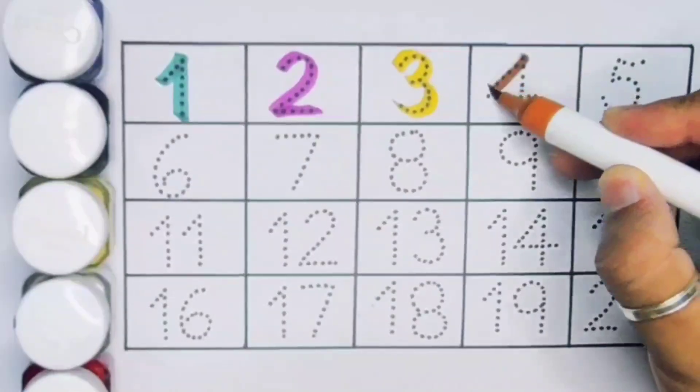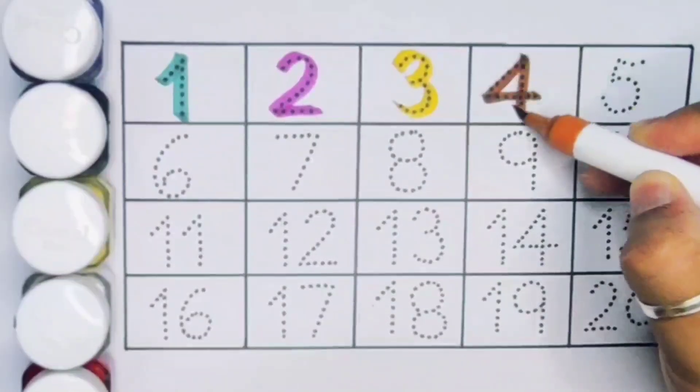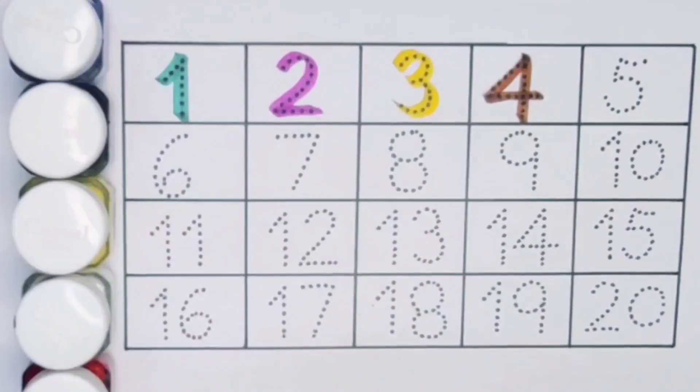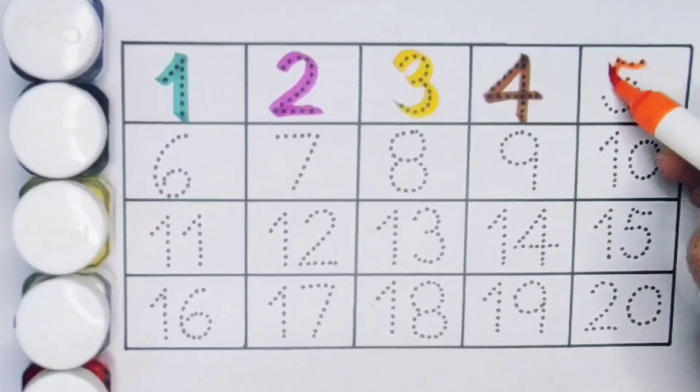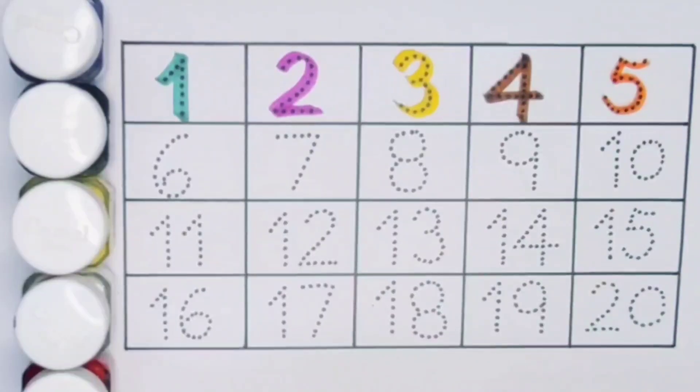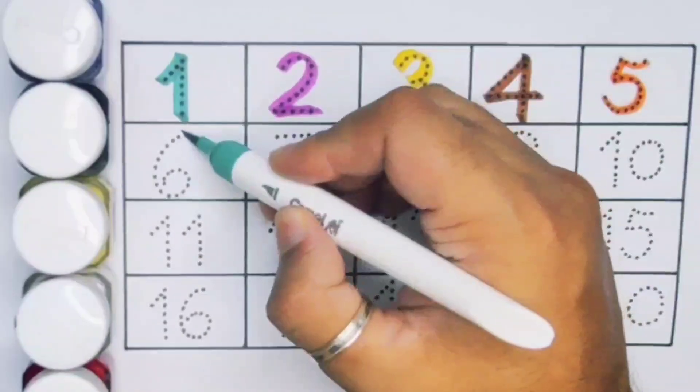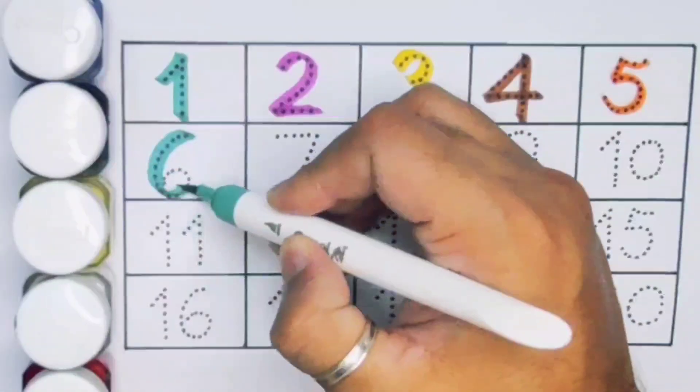Next 4. Number 4. Next kids 5. Number 5. Next kids 6. Number 6.